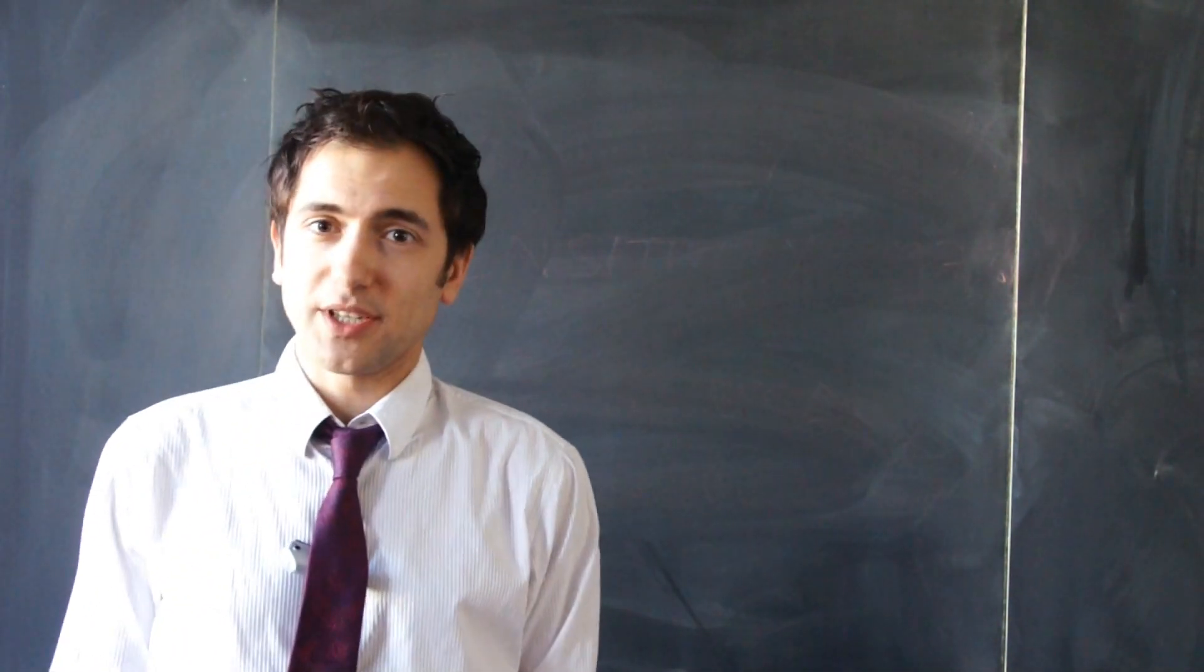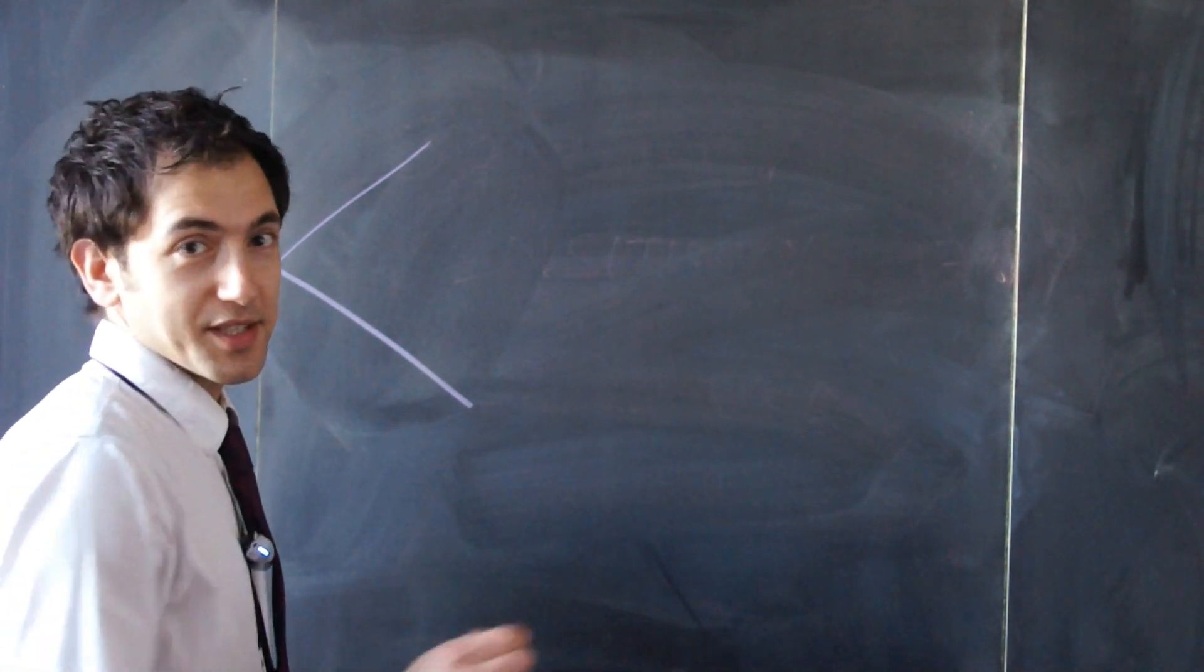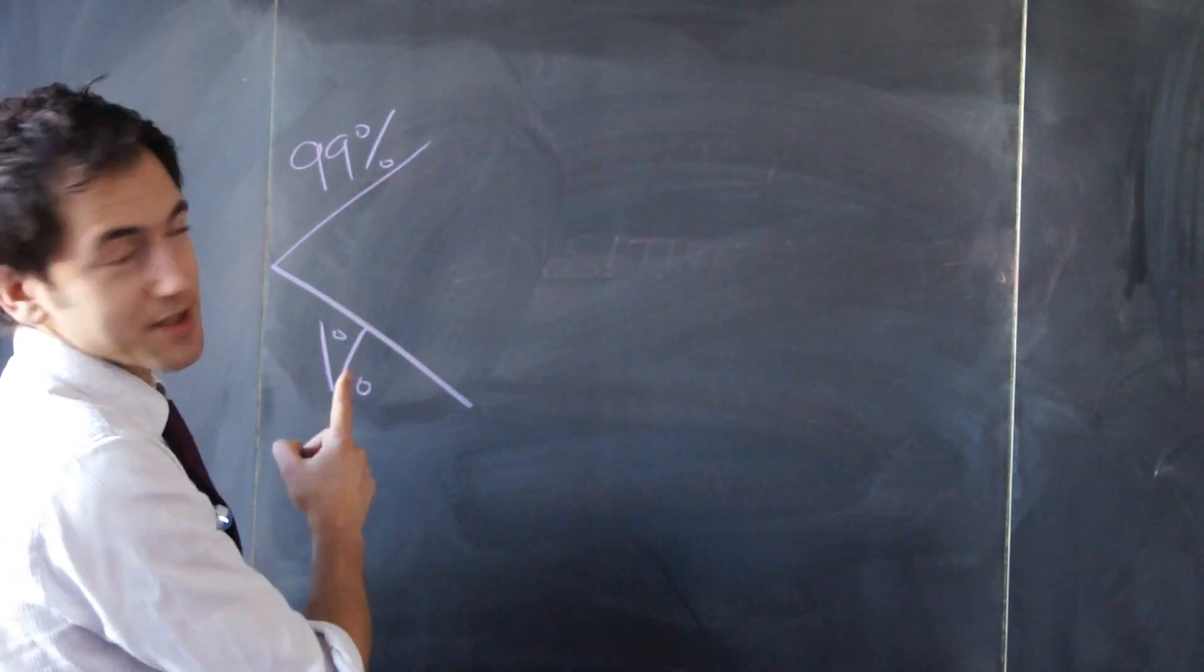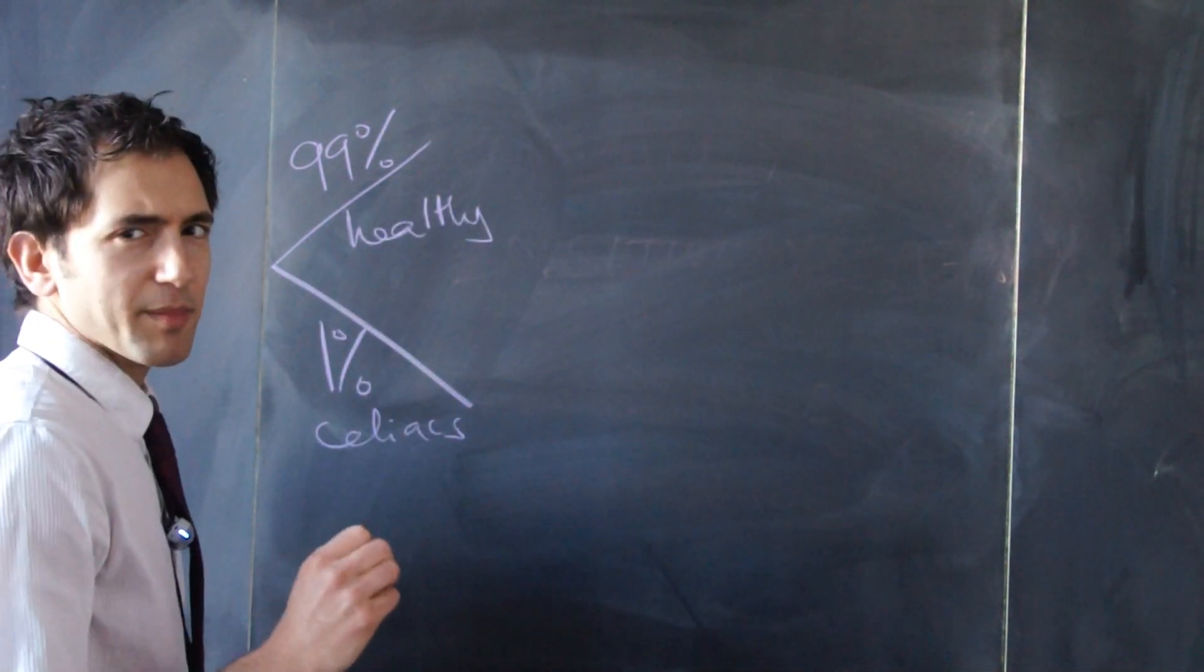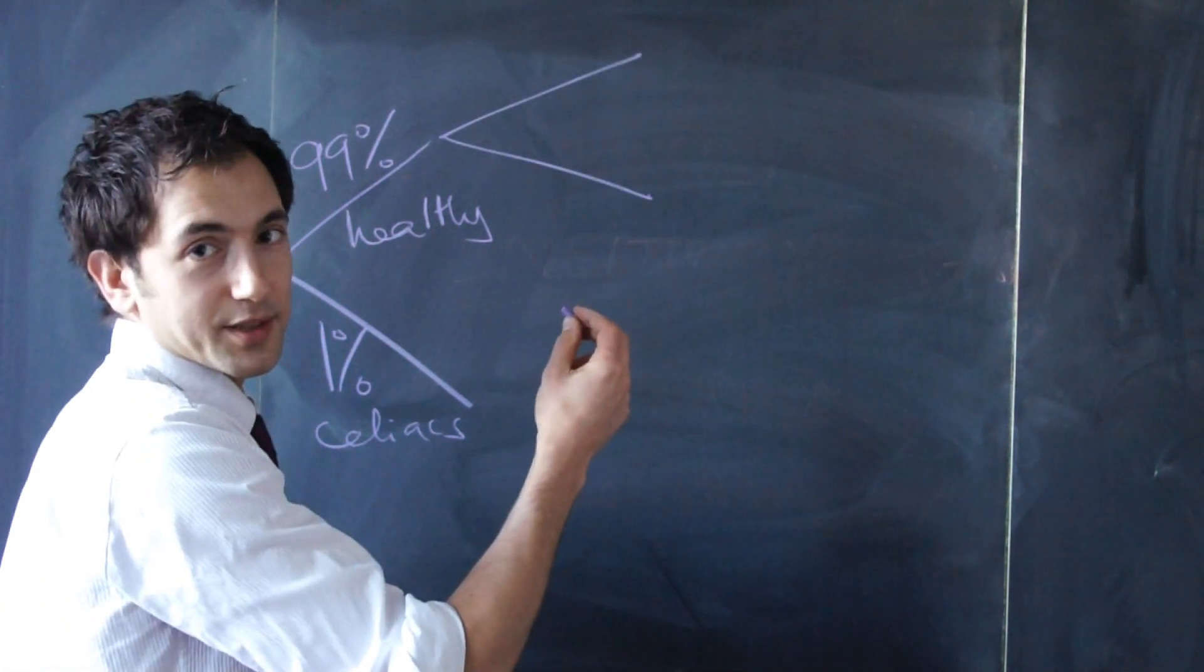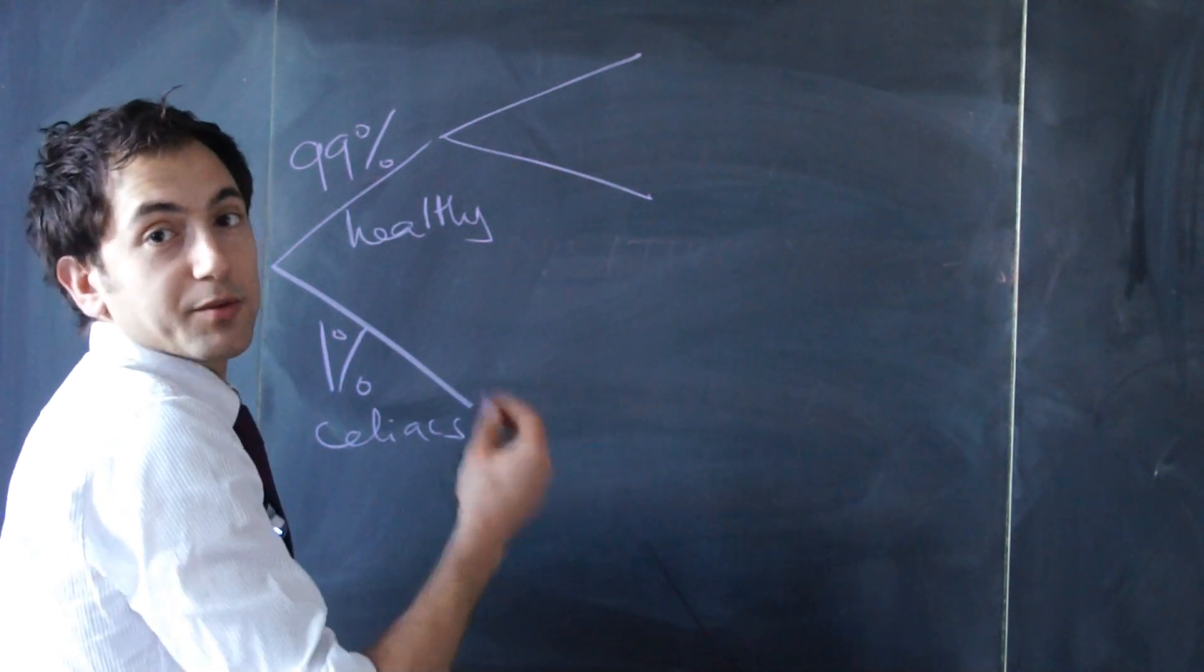Let's start by looking at the whole population. It divides into the healthy group and the group who has celiac disease. 99% are healthy, 1% have the disease. Let's think about what happens when these people take the tests. There are two possible results: they test positive for the disease, or they test negative, meaning they're healthy.